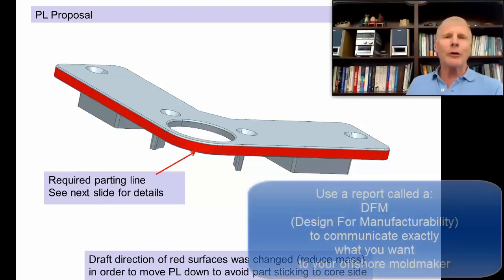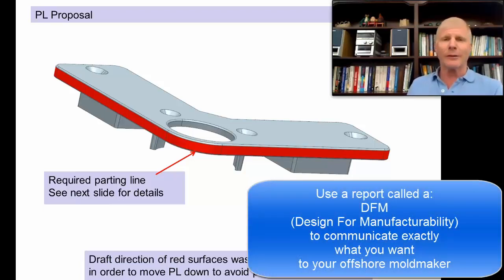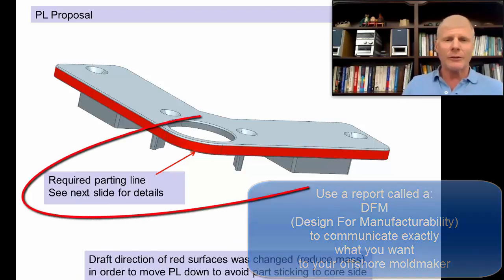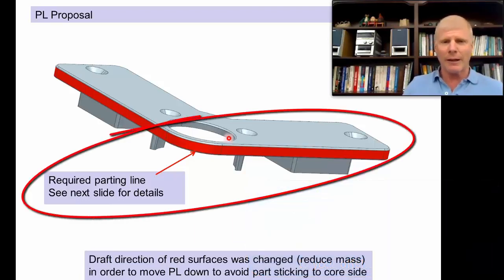So how do you prevent such a surprise? We use a tool like the one you're looking at here. This is part of a document we call a DFM analysis. As you can see on the screen, if you follow my cursor, you can see where we've identified where the parting line is recommended to be on this part.